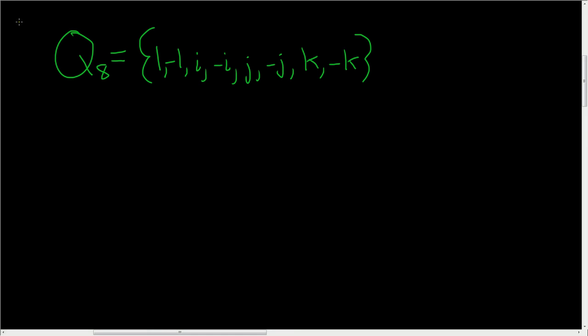This is just a quick video to talk about the group of quaternions. The notation we'll use for the group is Q with a subscript of 8. The 8 denotes the number of elements. We have 8 elements, and this group is called the quaternions.